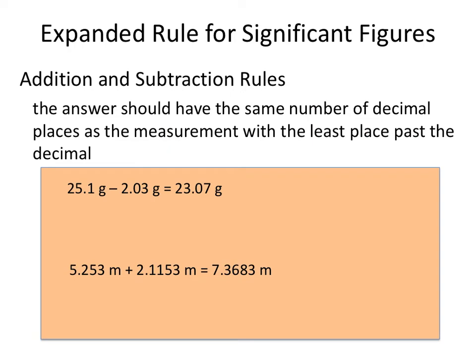Let's look at the significant figure rules for addition and subtraction. Whenever you're adding and subtracting numbers, your answer is going to have the same number of places to the right of the decimal as the measurement with the least places past the decimal. In this first problem, the first measurement only has one place past the decimal and this one has two places. Because this one only has one place past the decimal, my final answer can only have one place past the decimal.